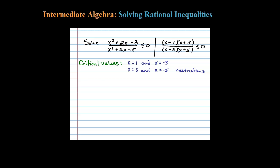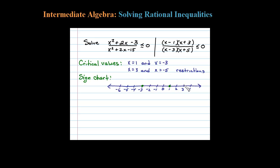Let's make a sign chart. Here's a number line. We have the equal sign in the inequality, so I'll put a closed dot at 1 and a closed dot at negative 3, since these are zeros of the numerator. However, I'll put an open dot at the restrictions: an open dot at 3 and an open dot at negative 5. We never include restrictions in the solution set, but restrictions are still critical values.